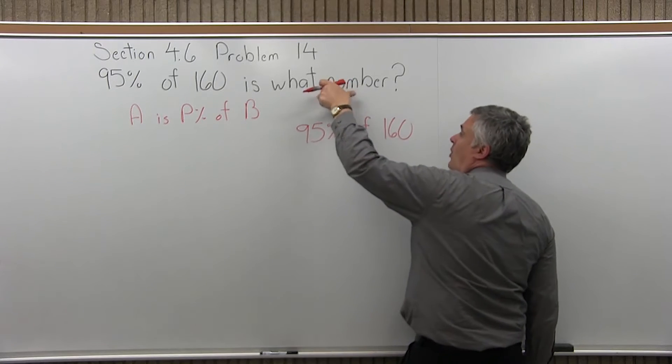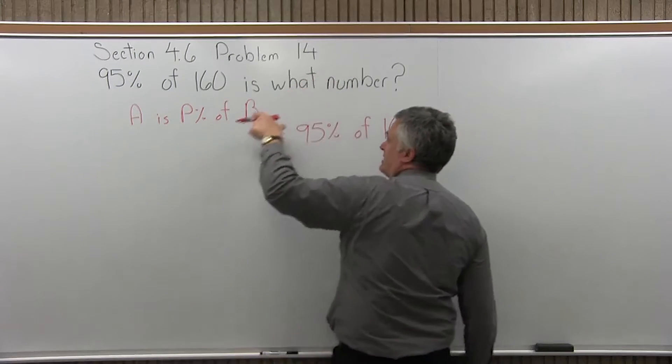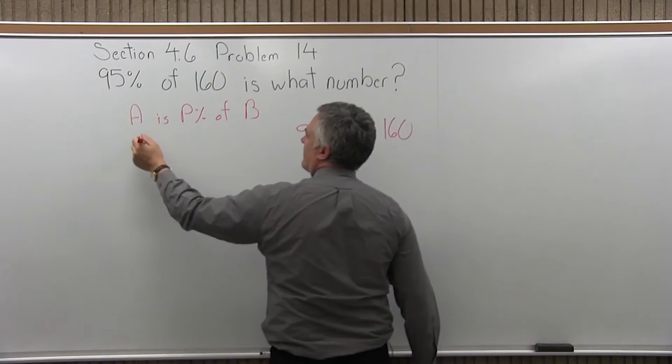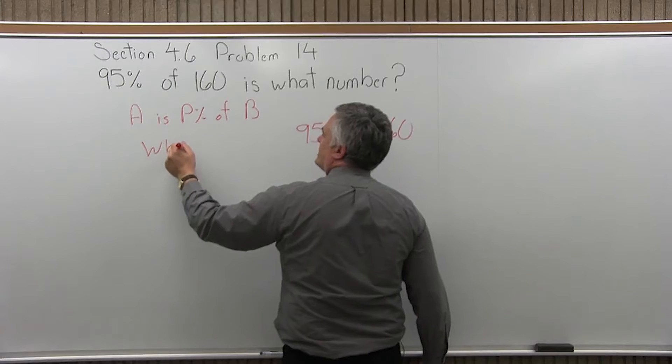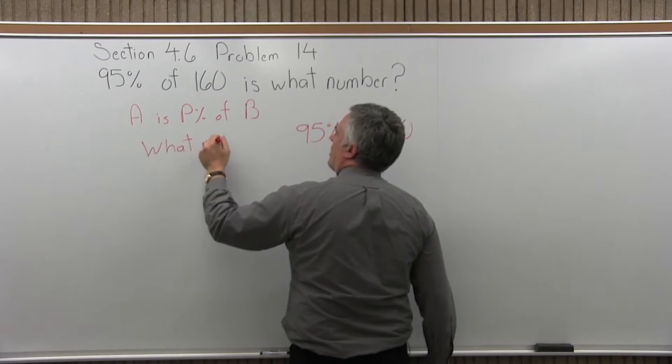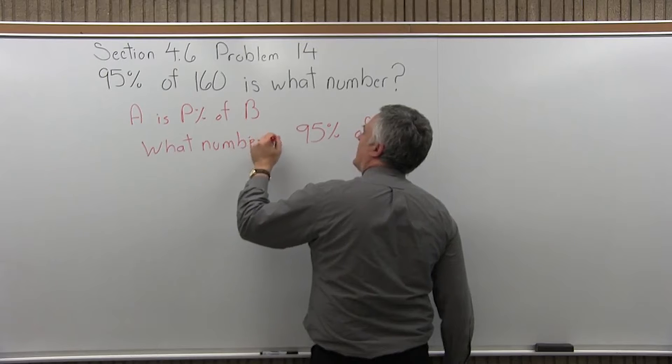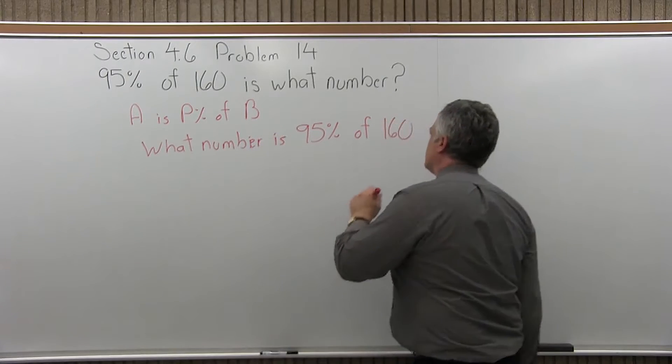And then what's left? What number? That's the unknown. That's going to be the A. That has to go to the beginning. So we rearrange the question to what number is 95% of 160.